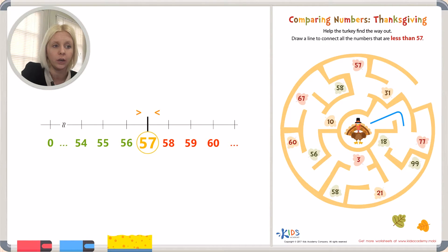Do we go to the 18 or the 77? Is 77 less than 57? No, it's greater than 57. It's bigger than 57. What about 18? Is that less than 57? Yeah, so we're going to go down to this one. It would be 18 on this side of the number line.